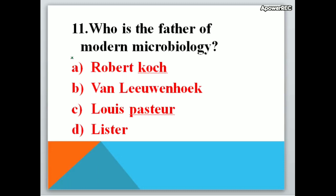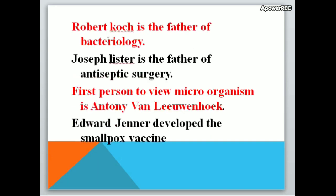The next three questions are related to microbiology. Who is the father of modern microbiology? A. Robert Koch, B. Antony van Leeuwenhoek, C. Louis Pasteur, D. Lister. Correct answer is Antony van Leeuwenhoek — he is also the first person to view microorganisms. Robert Koch is the father of bacteriology. Joseph Lister is the father of antiseptic surgery. Edward Jenner developed the smallpox vaccine.